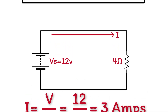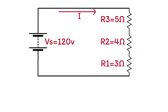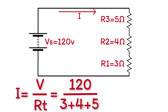For three resistors connected in series with a battery voltage of 120 volts, the current through each resistor is the same because they are in series. Using Ohm's Law, current equals the voltage across all three resistors over the total equivalent resistance: 120 volts over 3 plus 4 plus 5, which equals 120 over 12.